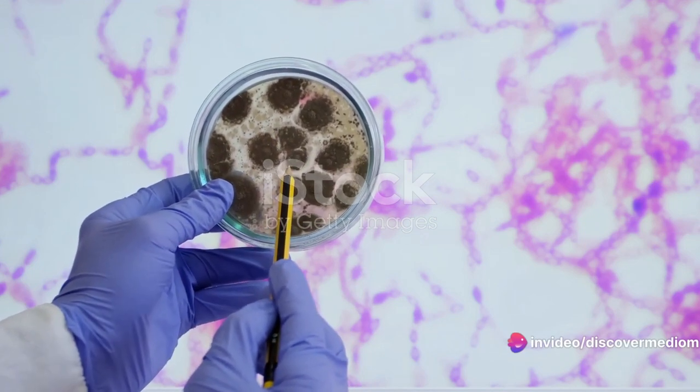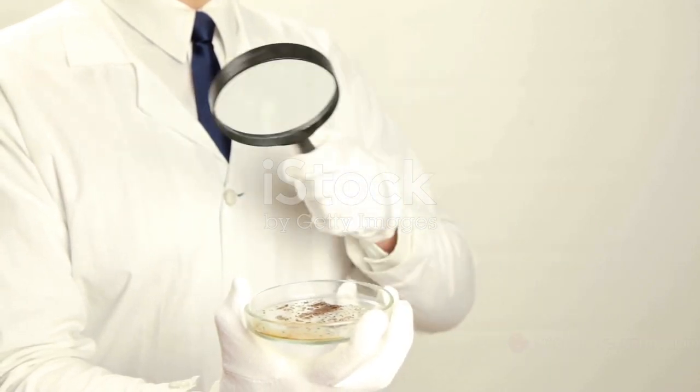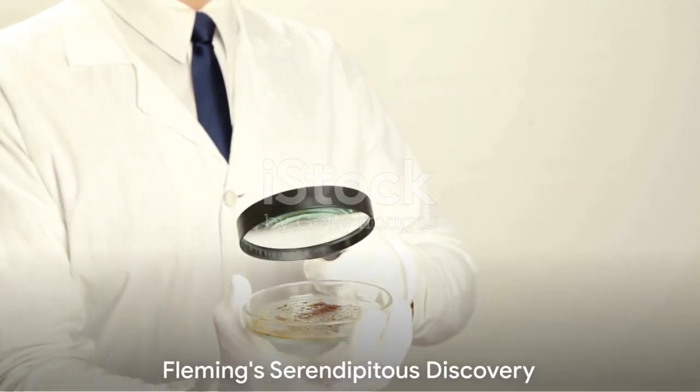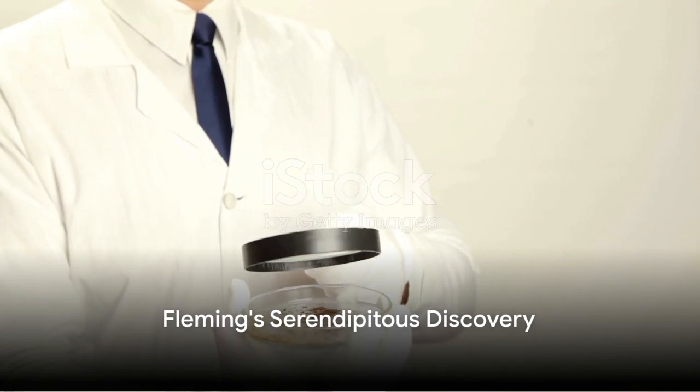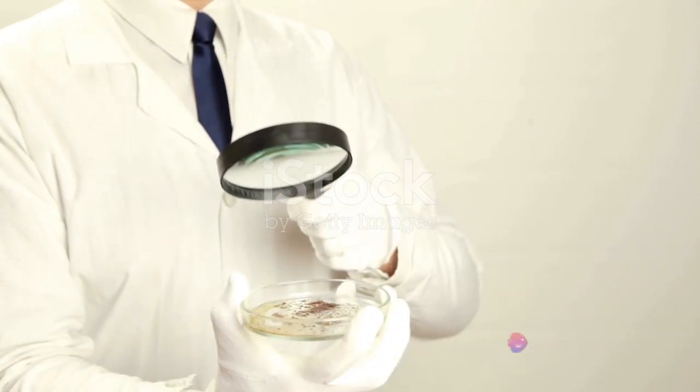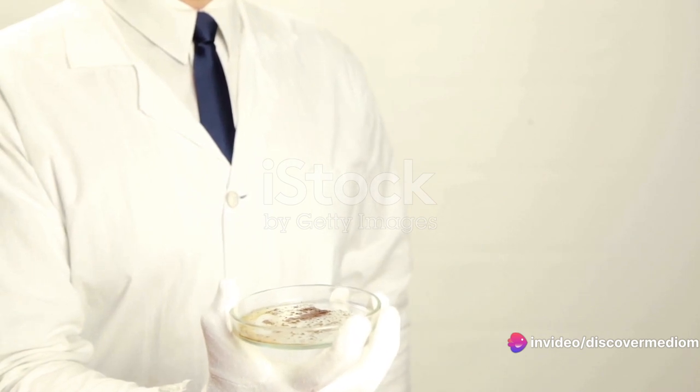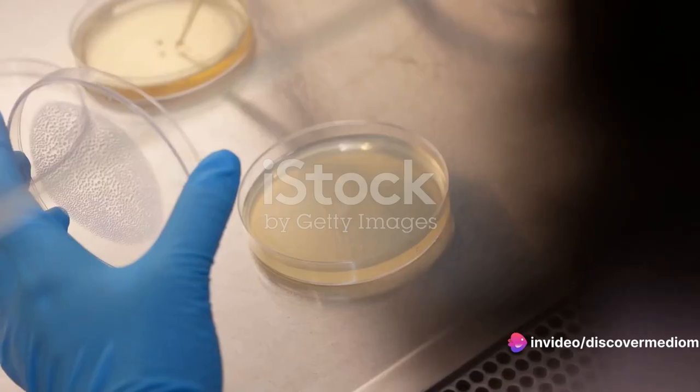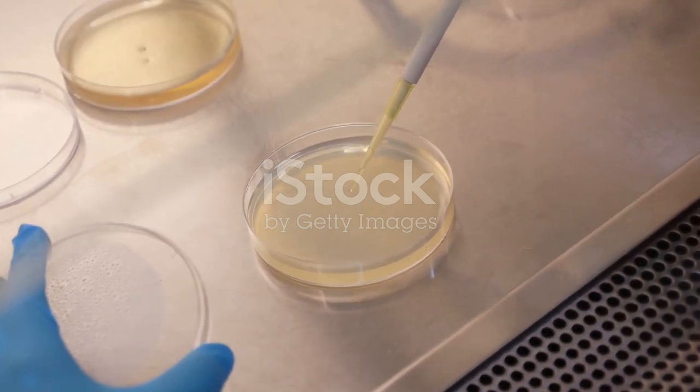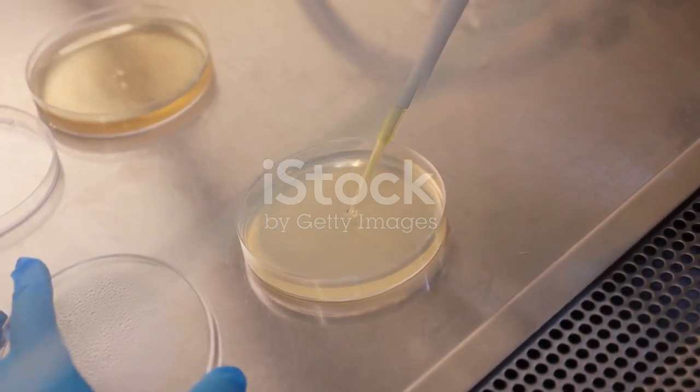Fleming realized this wasn't just any mould, it was a strain of Penicillium notatum. Fleming didn't dismiss this as a random occurrence, he saw an opportunity. He realized that the mould was producing a substance that was killing the bacteria. He named this substance Penicillin, and with this, the world's first antibiotic was discovered.